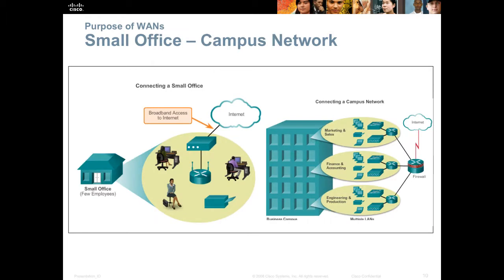Small office campus network — if you had a small office, it would have a few employees. Cisco defines a small office as one to 200 devices, so sometimes a small office is not that small. The campus network is considered an enterprise or large network, typically 1000 or more devices. When we connect a small office, we use a different type of connection than in a large office. Some things we might use in a small office include broadband — things like DSL, cable, or even cellular.